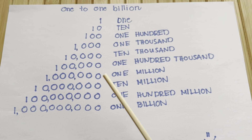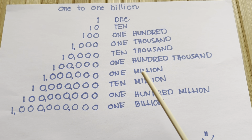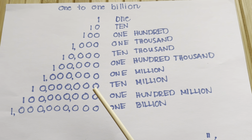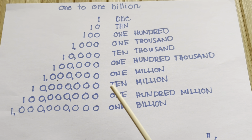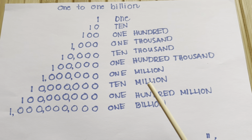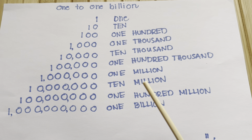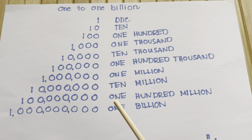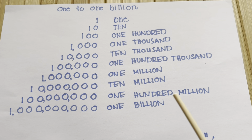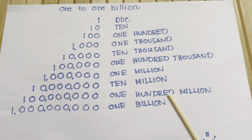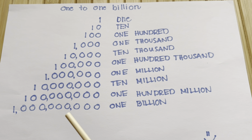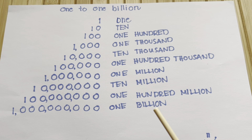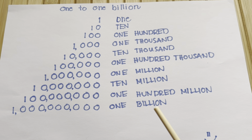One million, one million. Ten million, ten million. One hundred million, one hundred million. One billion, one billion.